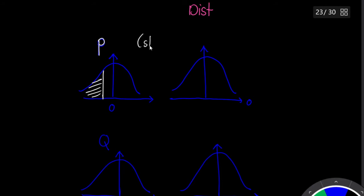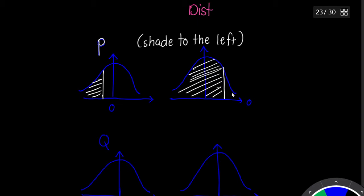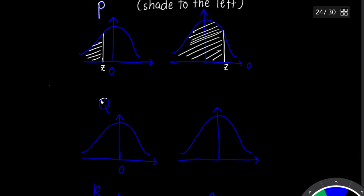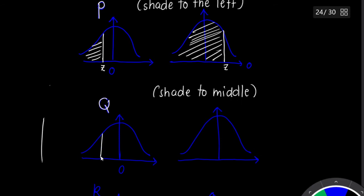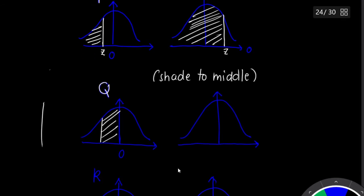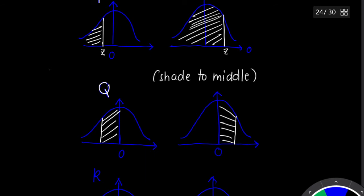The letter P means you are shading towards the left-hand side — either shading from a point to the left, or from a positive Z all the way to the left. The letter Q means you are shading to the middle — the area between a Z-score and zero (the center). R means you shade to the right — from a Z-score going right.